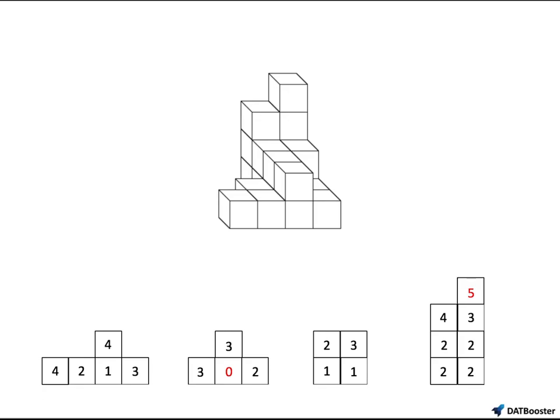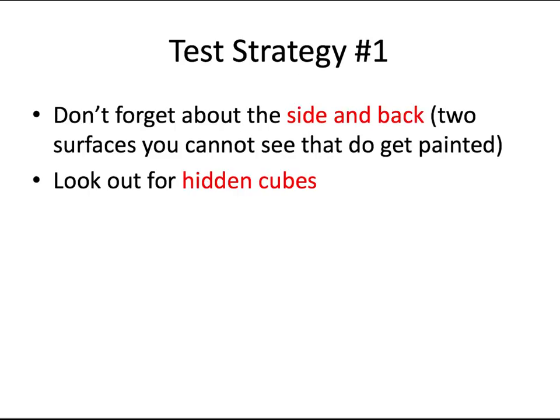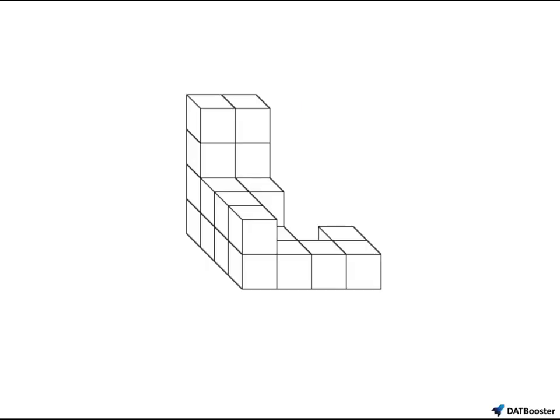And the real power of this method is you can't accidentally count a cube twice or leave a cube unaccounted for, which is actually really easy to do with the tally method, especially if you're trying to move quickly. My first test strategy is to not forget about the side and the back, which are surfaces you cannot see that still get painted, and also to look out for hidden cubes. Go ahead and pause the video and try this one on your own with either the tally or drawing method.